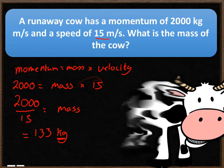Note the units carefully. Since momentum is in kilogram meters per second and velocity is in meters per second, dividing them correctly gives us mass in kilograms.